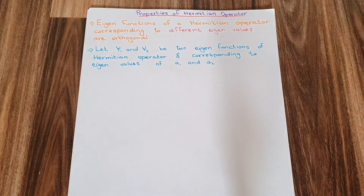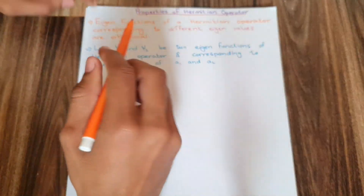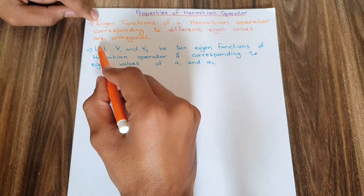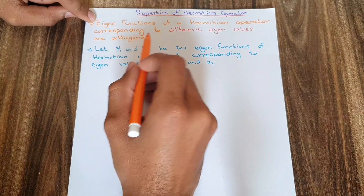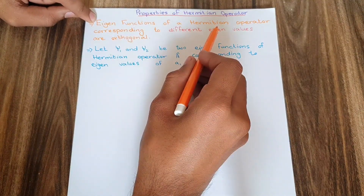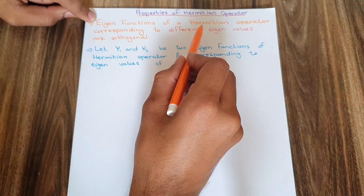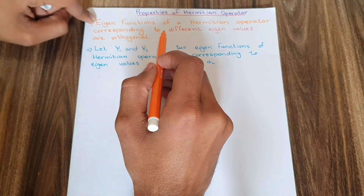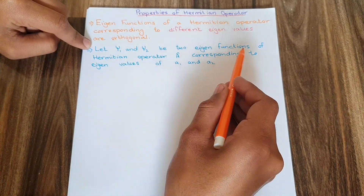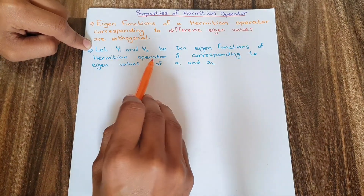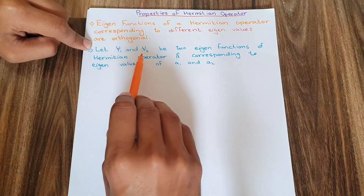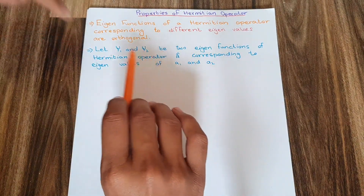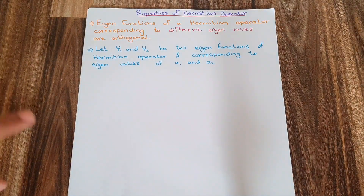Assalamu alaikum YouTube viewers. Today in this video I am going to describe another property for Hermitian operators. As you can see, eigenfunctions of a Hermitian operator corresponding to different eigenvalues are orthogonal. We are going to prove this statement. Let me describe this by an example — take ψ₁ and ψ₂ as two eigenfunctions of a Hermitian operator A. After applying the operator on either, I get eigenvalue a₁ for ψ₁ and a₂ for ψ₂.